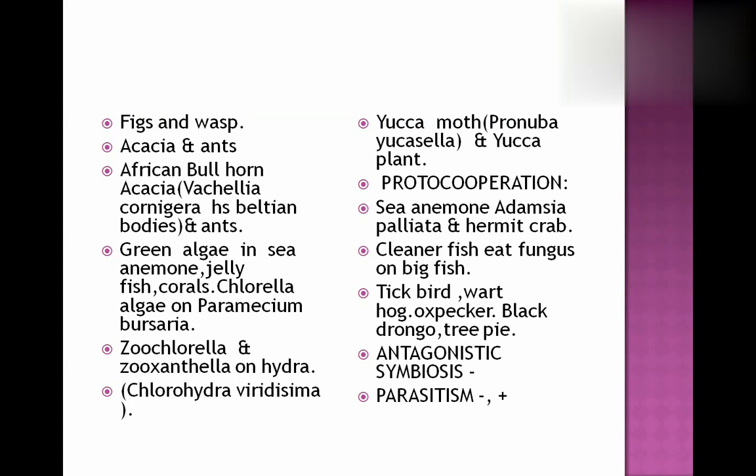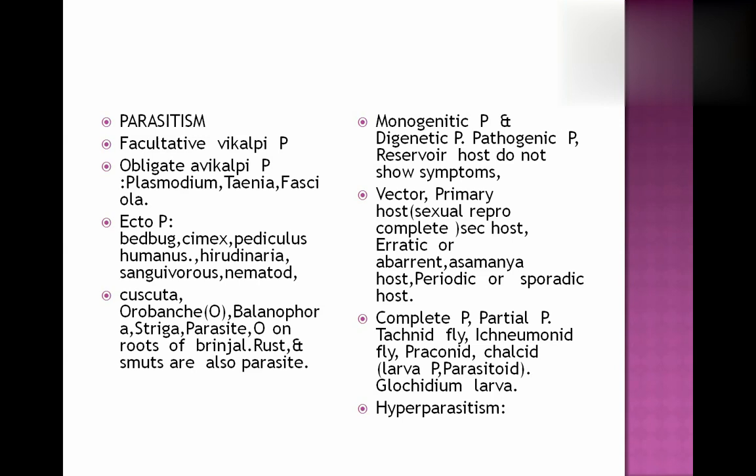First type of antagonistic relationship is parasitism. A small animal lives in the body of a large animal. The large animal gets harmed because diseases are caused in it. Examples are facultative parasites, obligate parasites. Plasmodium, Tinea, Fasciola are examples of obligate parasites.